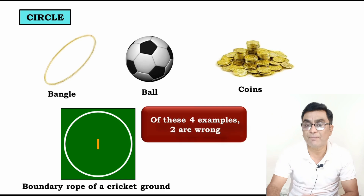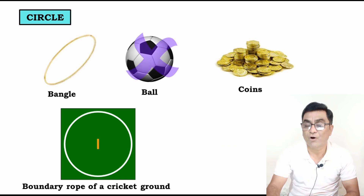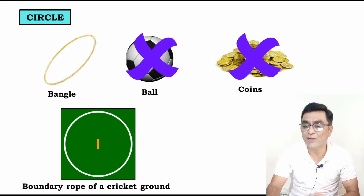Of these four examples, two are wrong. Ball and coins — those are wrong.